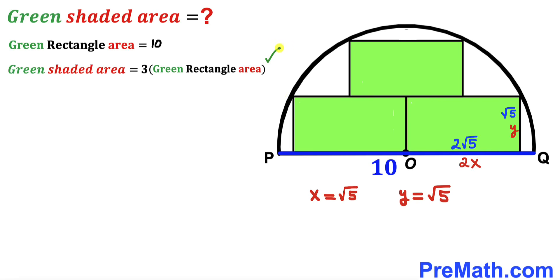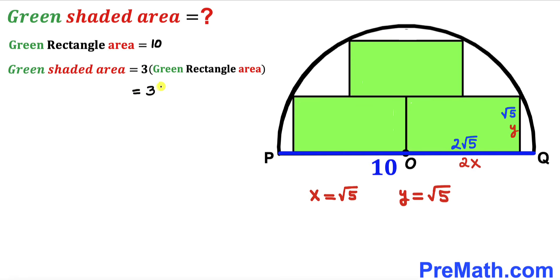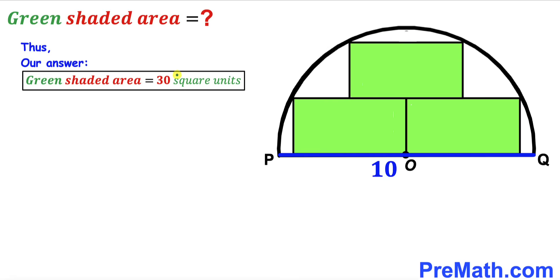Recalling that the green shaded region area equals 3 times the green rectangle area, we get 3 × 10 = 30 square units. So the area of the green shaded region turns out to be 30 square units.